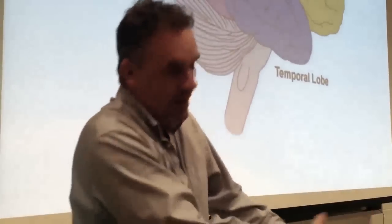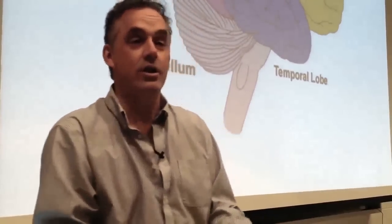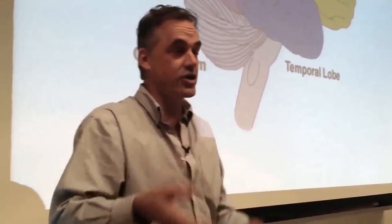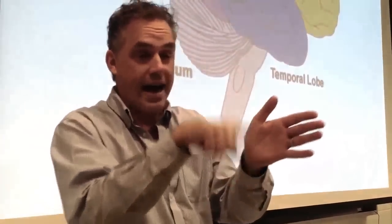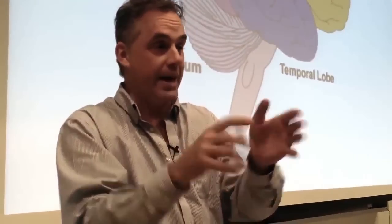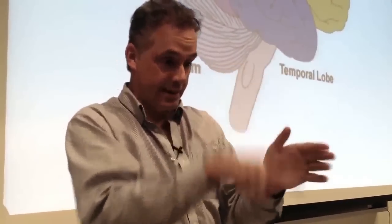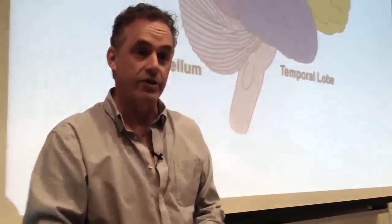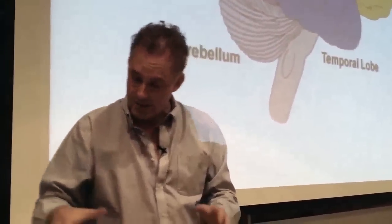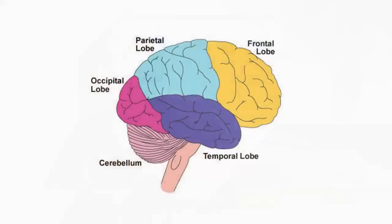So they grab it and throw it out, which is not so good because they're attached to it. Or they'll eat only half the food on their plate. But if you turn the plate, then they'll eat half of the half that's left. Anyway, that's the parietal lobe.